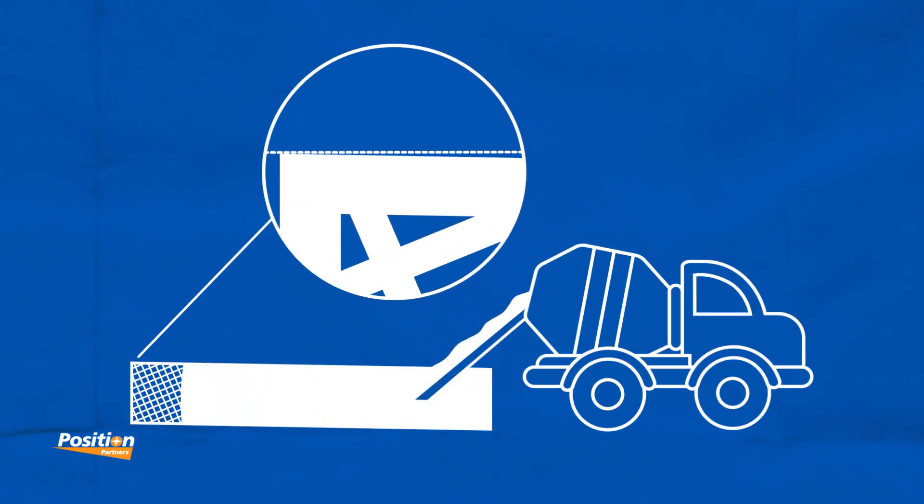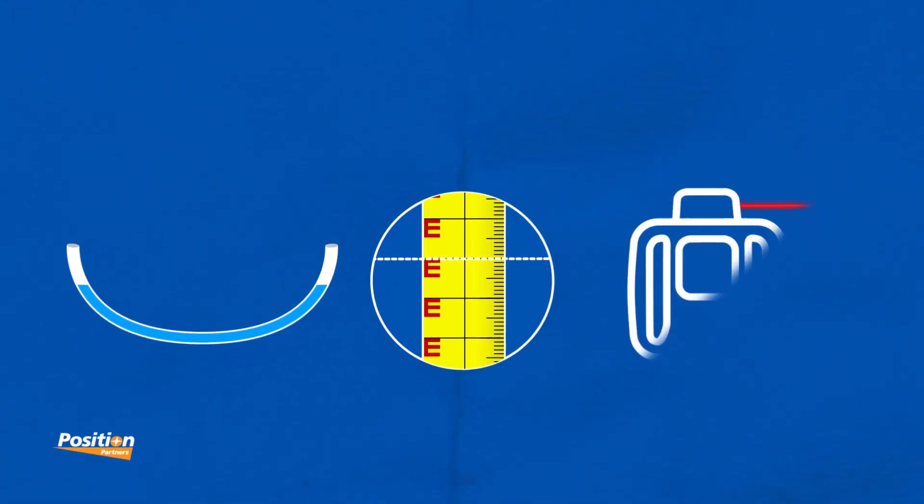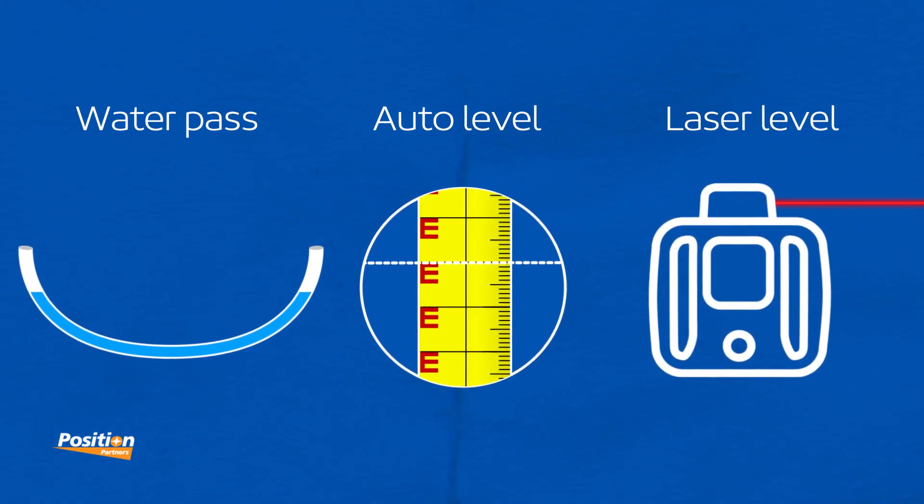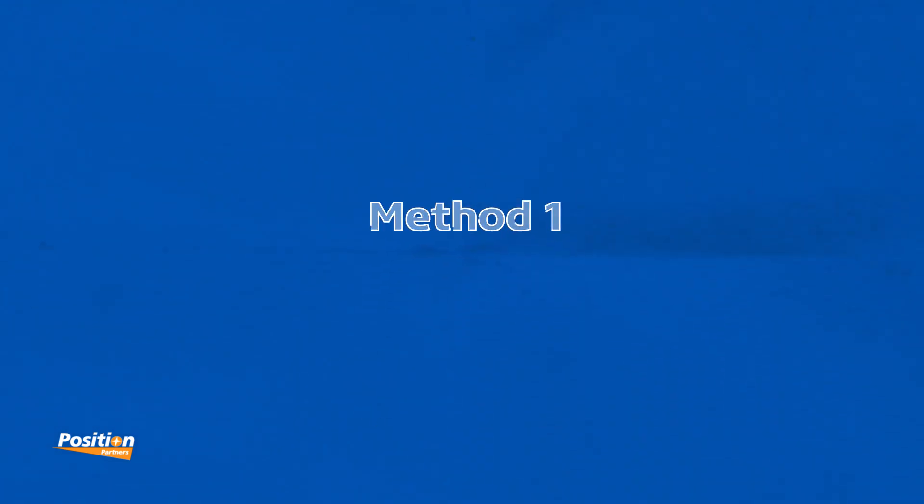Working in construction, getting the right level or grade is the number one essential to getting the job done right. On the modern job site, contractors have a range of options available when it comes to getting accurate levels. Let's take a look.